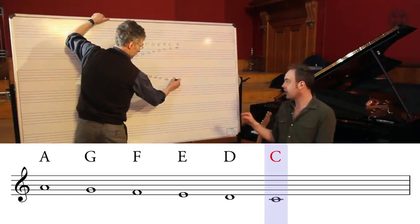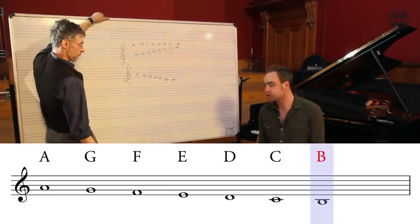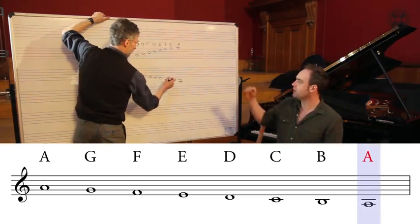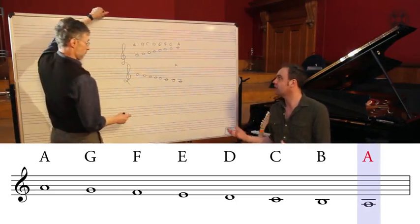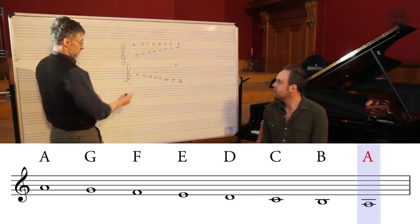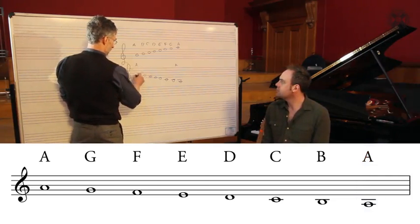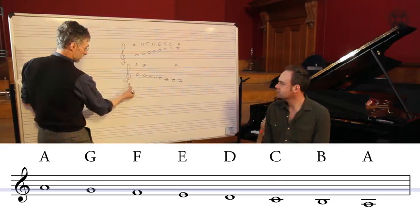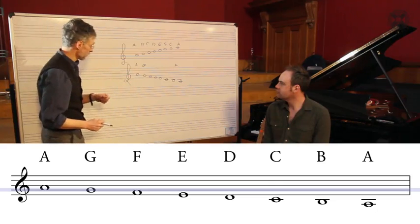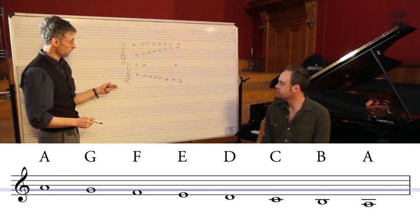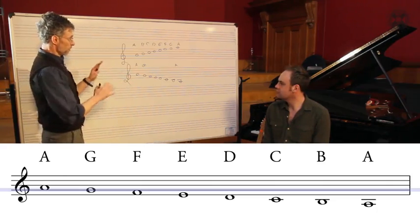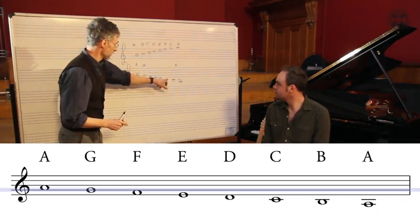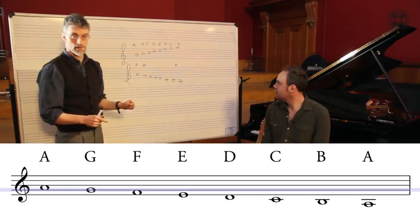Our musical alphabet runs A, B, C, D, E, F, G and then the sequence starts repeating itself. One other thing to mention: the symbol on the stave circles around the G line, so this symbol can be called a G clef, or more commonly nowadays, a treble clef. But the really important thing we've got to deal with is the existence of more than one A — and in fact, more than one C. What does that mean? That's what we're going to look at next.